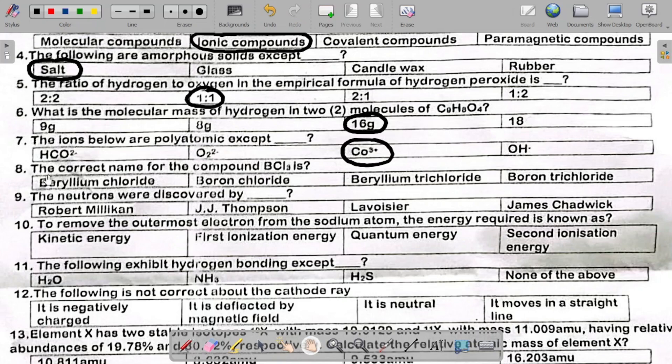Number eight says the correct name of BCl3 is. We know that B is boron. Then Cl is chlorine. Then three means three of chlorine. So it becomes boron trichloride. So the answer there is boron, and then three of chlorine becomes trichloride.